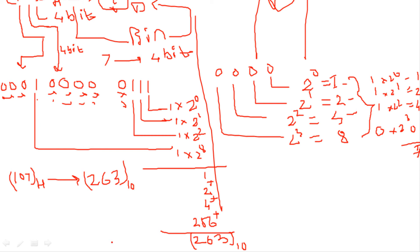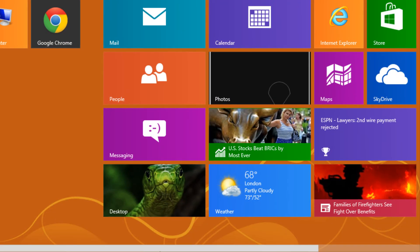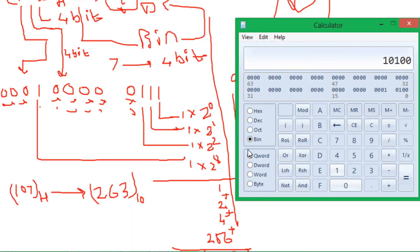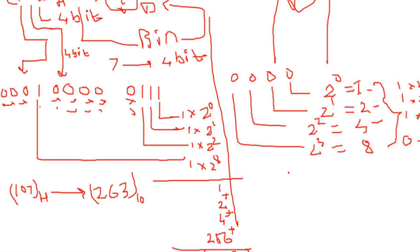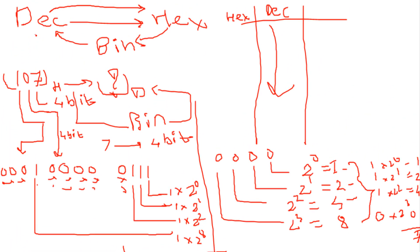Let's cross-check: entering 107 in hexadecimal on the calculator confirms the decimal value is 263. Verified. Now for converting decimal to hex, follow the same approach — first convert the decimal number to binary by dividing by 2.